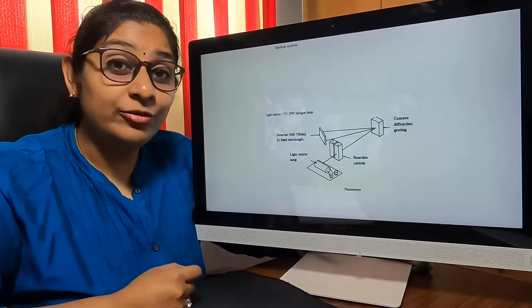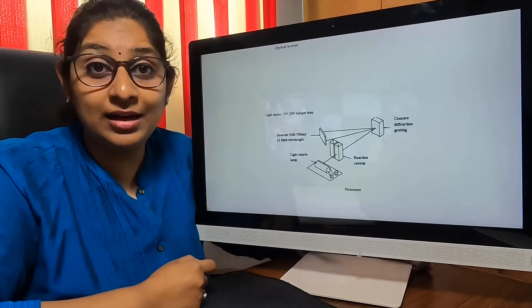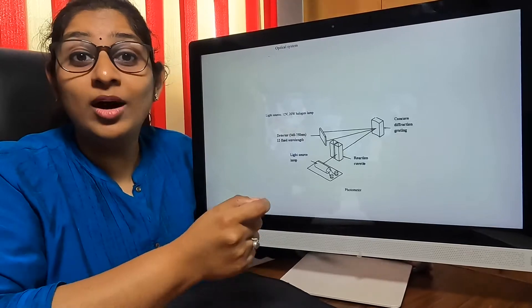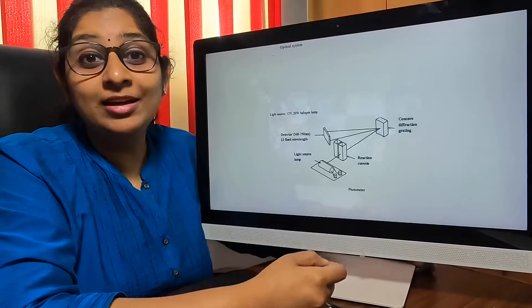We have already explained in detail how this photometric optical system works in a biochemistry analyzer. We will see in detail what are the other things specifically used in this Durabi machine for having a better understanding of how this optical system works.